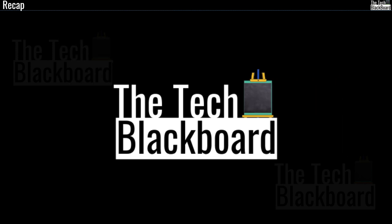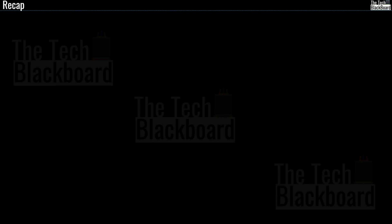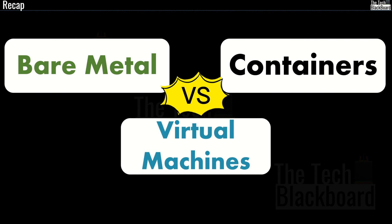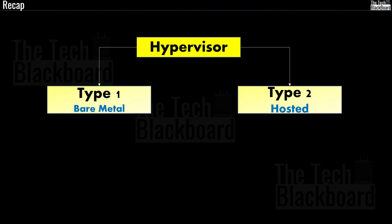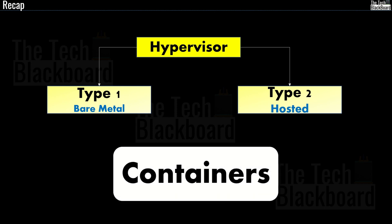Hello and welcome back to the Tech Blackboard. In the last video, I explained the differences between bare metal servers, virtual machines, and containers. We also understood why each of them is needed, pros and cons, and use cases for each. I also explained the term hypervisor, types of hypervisors, and how hypervisors enable the implementation of containers. In case you missed that video, the link is shared in the description box and in the i-button above.